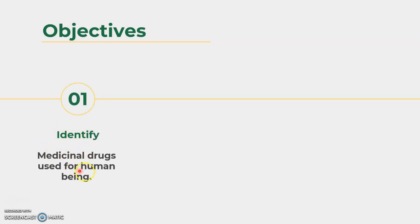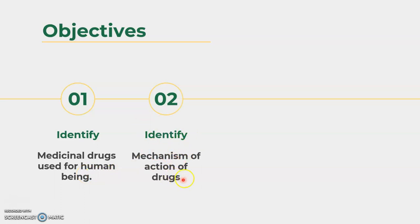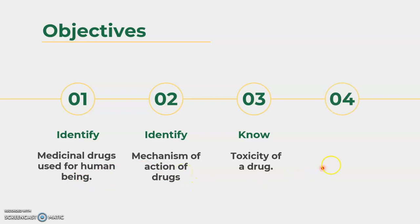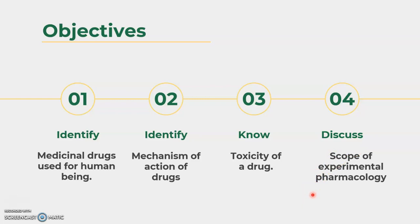Now, what are the objectives of experiment number one? Number one: identify the medicinal drugs which are used for human beings. Also helpful to identify the mechanism of action of drugs and to know the toxicity of drugs. These are the three important objectives. Apart from this, we will discuss the scope of experimental pharmacology with the help of these four objectives. Students will achieve all four points.